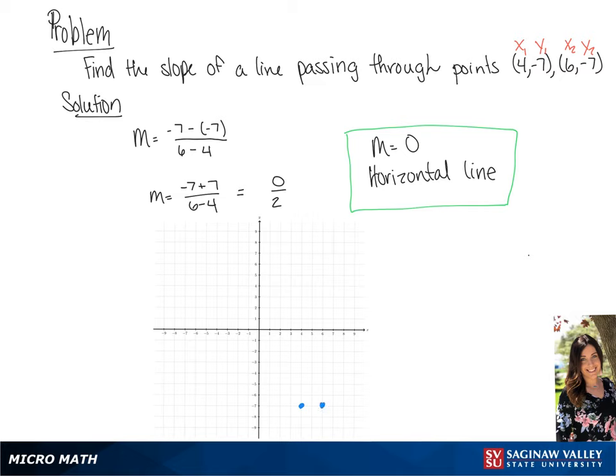And we're going to draw our line. And you see that our line is a horizontal line at negative 7 with a slope of 0.